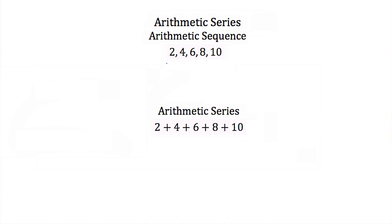Our example sequence here is 2, 4, 6, 8, and 10. To go from our first term 2 to our second term 4, this would be an addition of 2. To go from 4 to 6, that's another addition of 2. To go from 6 to 8, again another addition of 2. And from 8 to 10, another addition of 2. Because we're adding the same number — in this case 2 — each time, that makes this an arithmetic sequence.